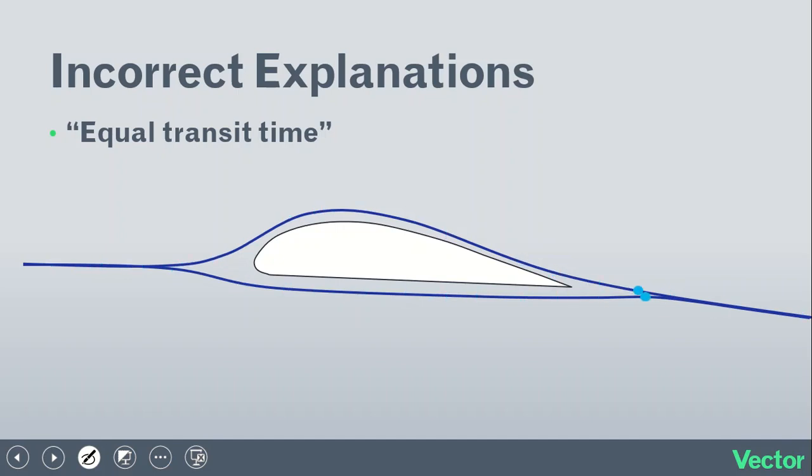If you look at any wind tunnel test or mathematical simulation, the air that moves over the upper surface gets past the airfoil before the air that's moving underneath the lower surface. So the air particles do not meet up at the end, and I don't really know why this is even out there, to be honest. But I've even seen this in certain test prep books, which I'm quite surprised about.